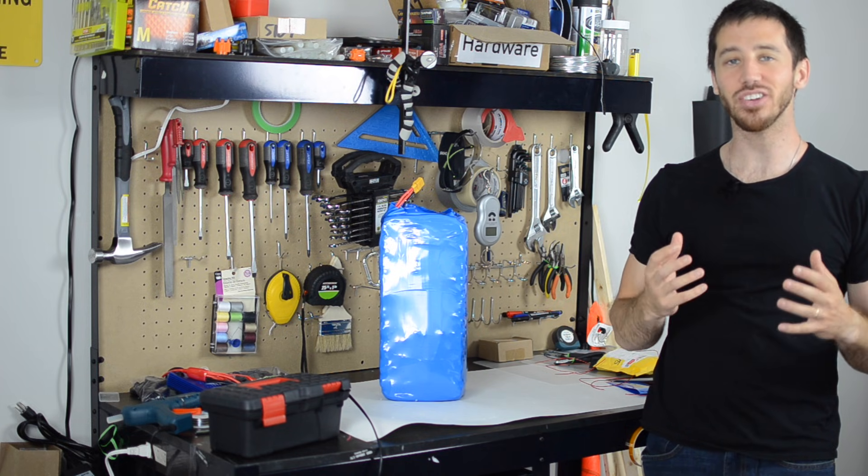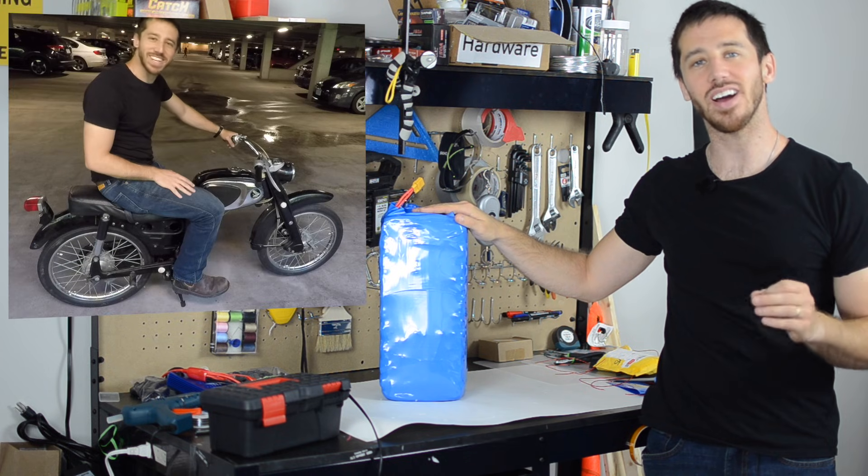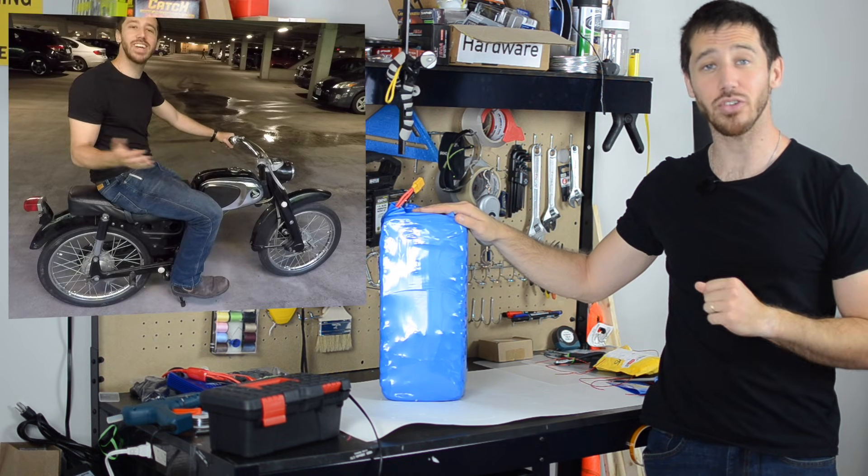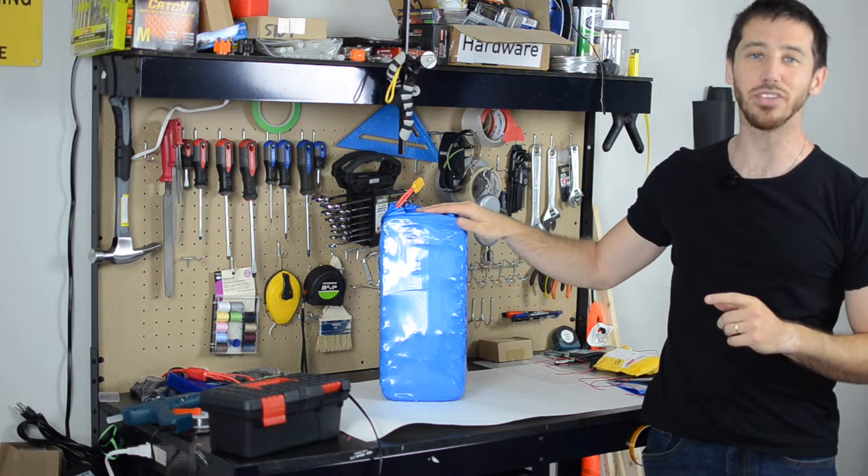Hey everyone, Micah here with ebikeschool.com, and today I've just finished building a 72-volt battery for my 1969 Honda SportsCub electric motorcycle conversion. And now I'm going to show you guys the steps I took to build this battery.